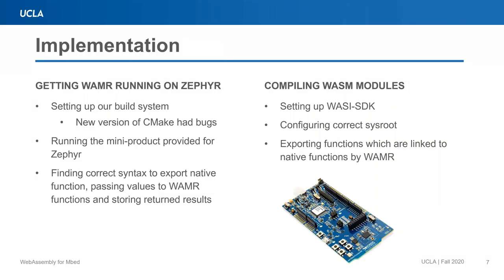The first thing that we did was to get WAMR running on Zephyr. For that, we had to set up our build system for Zephyr. It turned out to be less straightforward than expected — we encountered a bunch of bugs in the build system, including that the new version of CMake had actually broken the Zephyr build system. We found that out by asking the developers directly, but we were able to get it up and running on our Windows machine. After that, we understood what the mini product for WAMR on Zephyr was trying to accomplish, which let us understand the correct syntax for exporting native functions and how to pass values to WAMR functions and store return results.